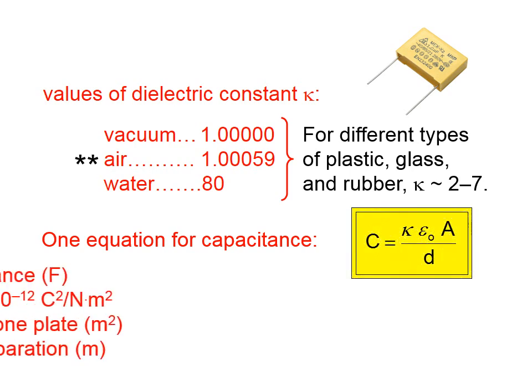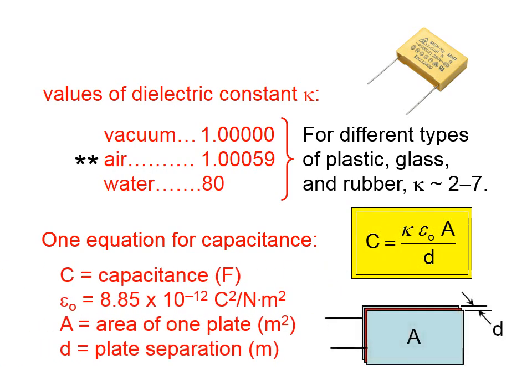So one equation for capacitance looks like this, where capacitance is measured in farads, symbolized by capital F. Epsilon naught is a constant called the permittivity of free space. A is the area of one of the metal plates in square meters, and d is the separation between the conducting layers in meters.